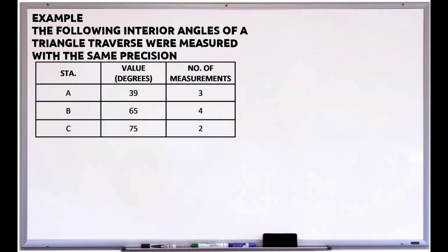we have different stations: Station A, Station B, and Station C. It also has corresponding value and number of measurements at each station. Station A has 39 degrees and 3 measurements. Station B has 65 degrees and 4 measurements. And Station C has 75 degrees and 2 measurements. There are three questions in this example.